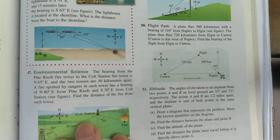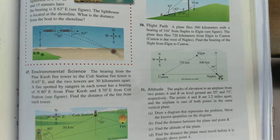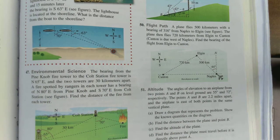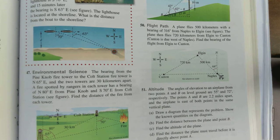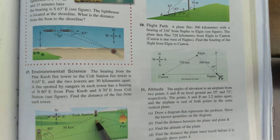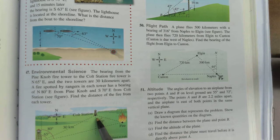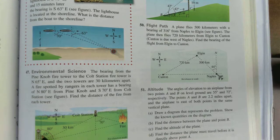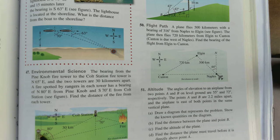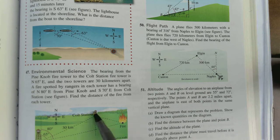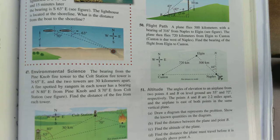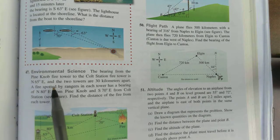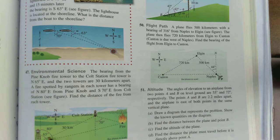Now, you can open your book and see it a little better, but the bearing from Pine Knob Tower right here to the fire tower at Colt Station is north 65 degrees east. So, that's a 65 degree angle when you draw that straight line off of that due north. And, the two towers are 30 kilometers apart.